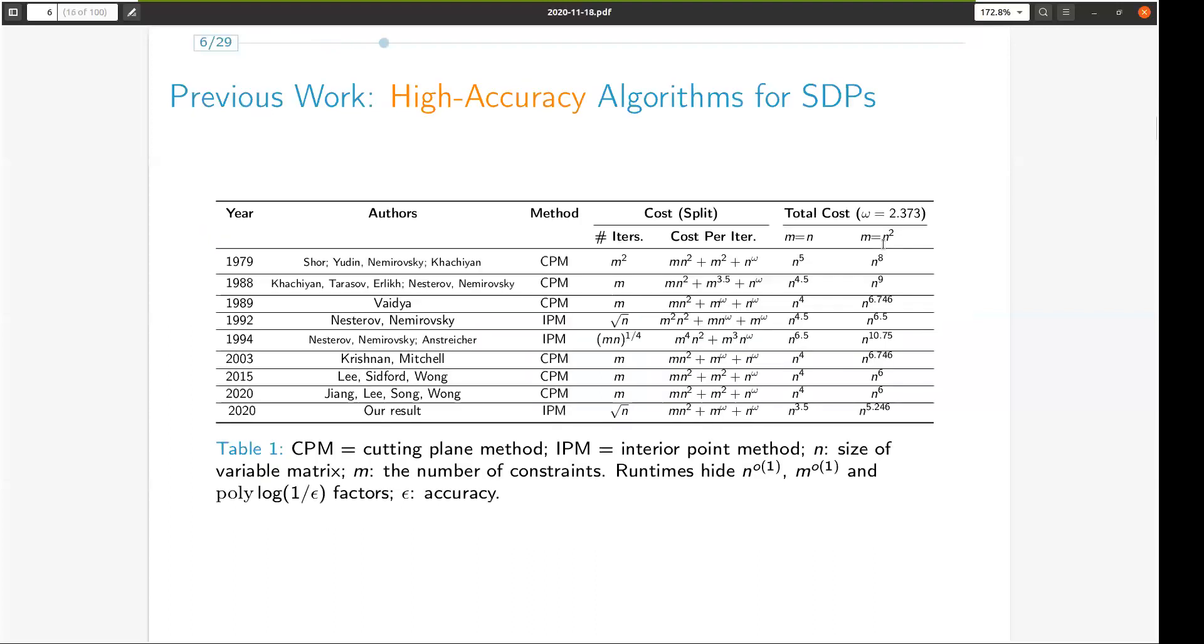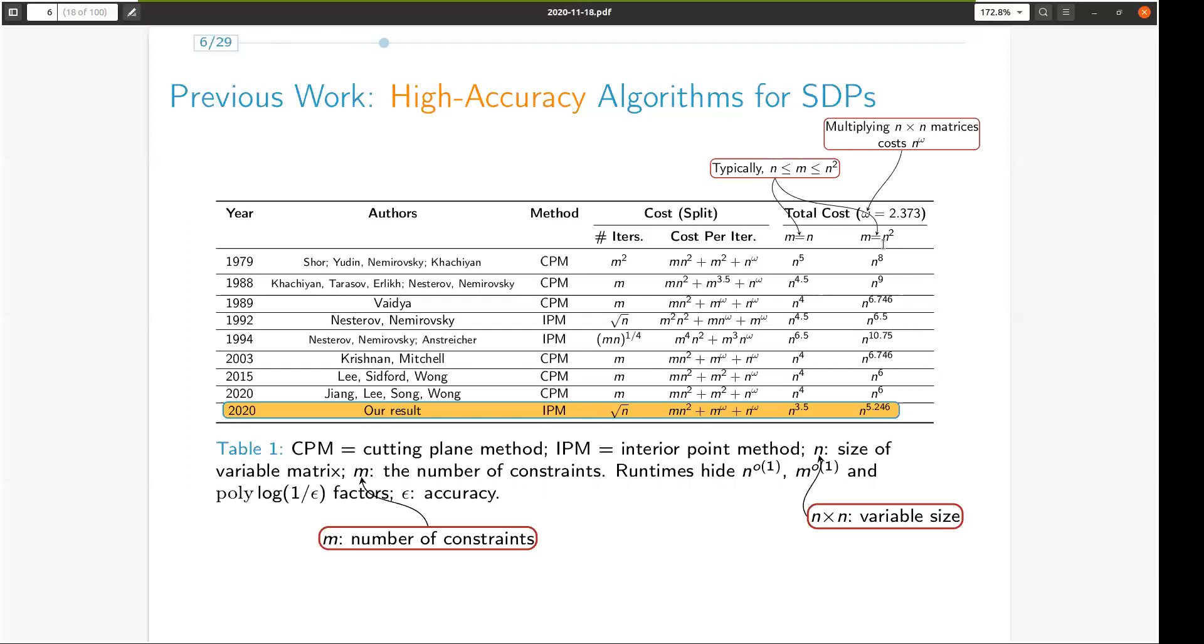Here is a table of previous work on high accuracy algorithms for SDPs. As a reminder, m is the number of constraints, n by n the variable size, and for many common problems such as those arising from graph theory, m lies between n and n square. Omega is a matrix multiplication constant, which means multiplying two n by n matrices costs n to the omega. As can be seen from this table, our runtime beats the previous best interior point method and the current best cutting plane method for SDPs.